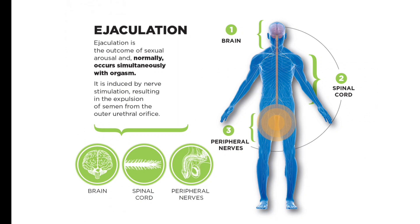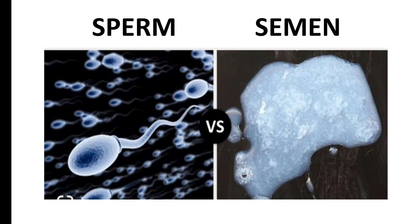Each ejaculation contains about 200 to 300 million sperm. The total amount of semen after each ejaculation in a human male averages between 2 and 5 ml. Remember, semen is not produced by a single gland — it consists of a combination of different components like sperm and fluids secreted by the seminal vesicles, prostate gland, and bulbourethral glands.